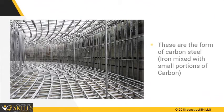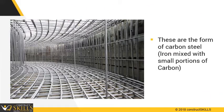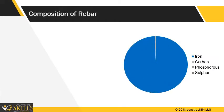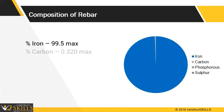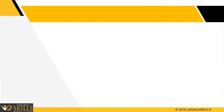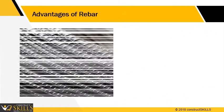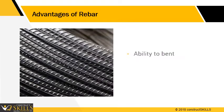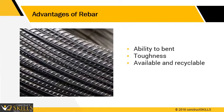The reinforcement steel is a form of carbon steel, in which iron is mixed with small portions of carbon. The chart shows the chemical composition of rebar — it has 99% iron and small traces of other elements. The main advantages of rebar are its ability to bend; it is tough, easily available, can be recycled, and stretches under loading.